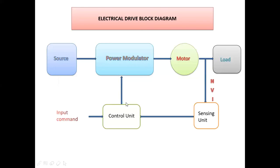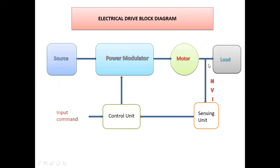The control unit contains firing circuits that develop pulses given to the power modulator. The control unit also consists of linear and digital circuits, integrated circuits, fuzzy logic, digital signal processing (DSP), and microprocessors. All these controllers control the power modulator, which in turn controls the voltage and speed of the motor. The speed then controls the load. This is the complete electrical drive block diagram.